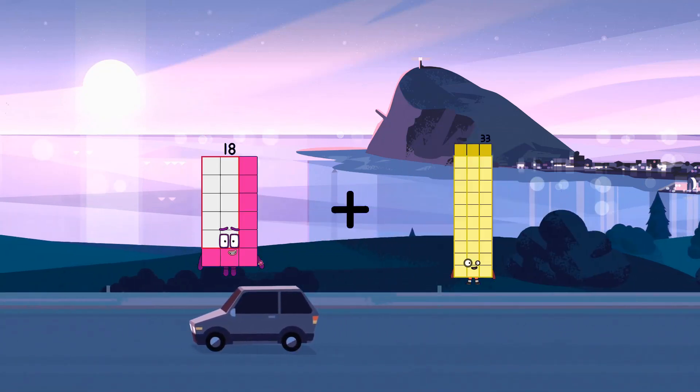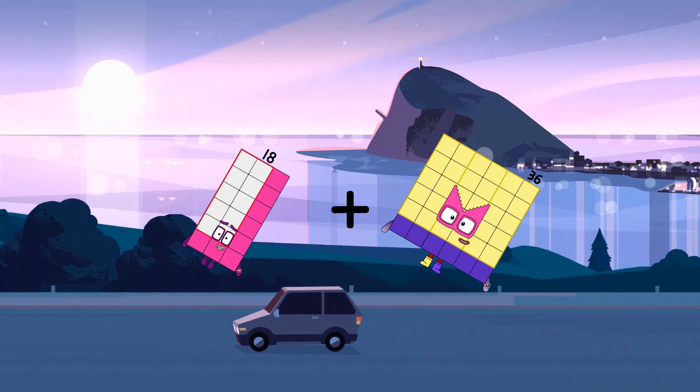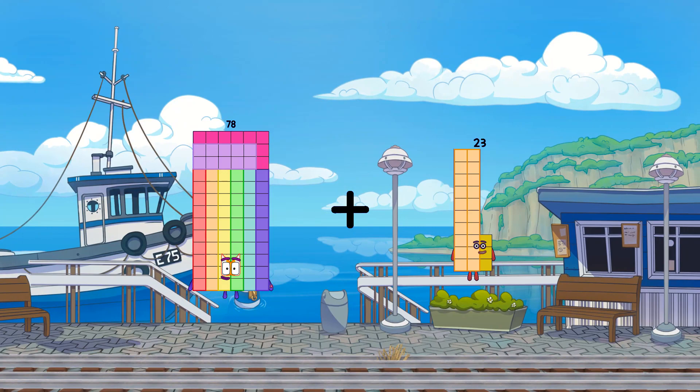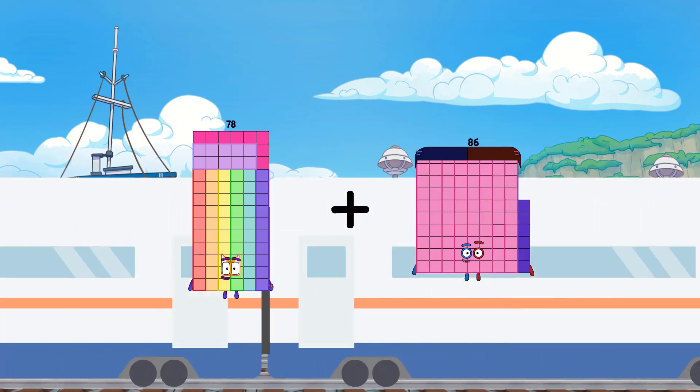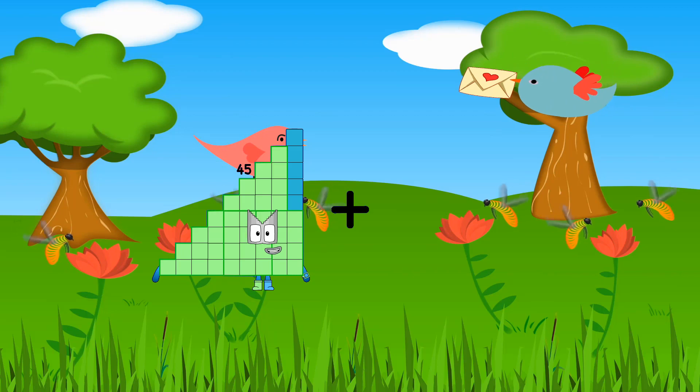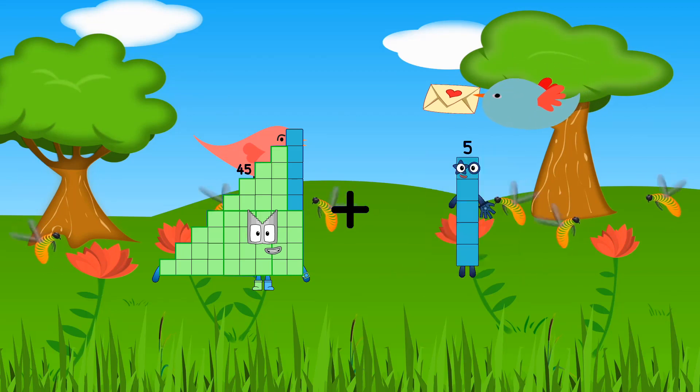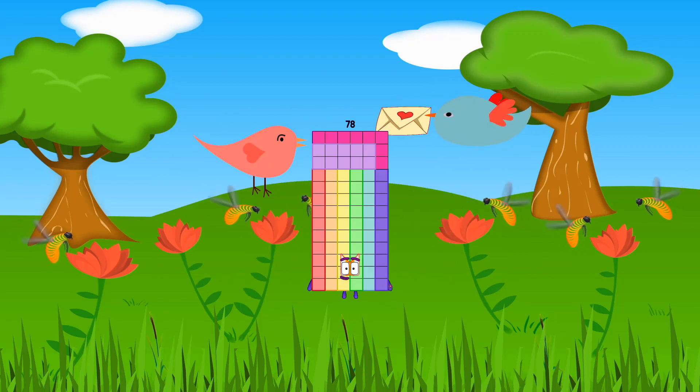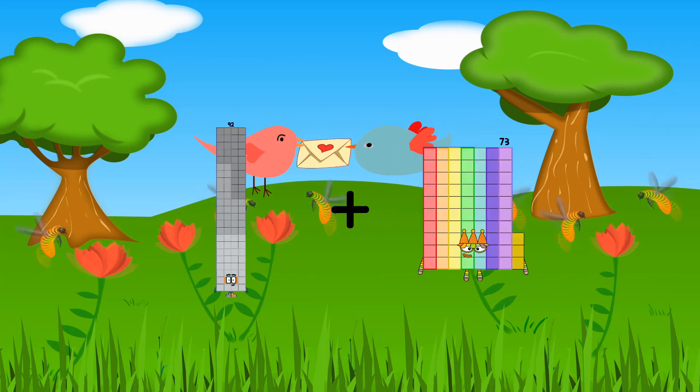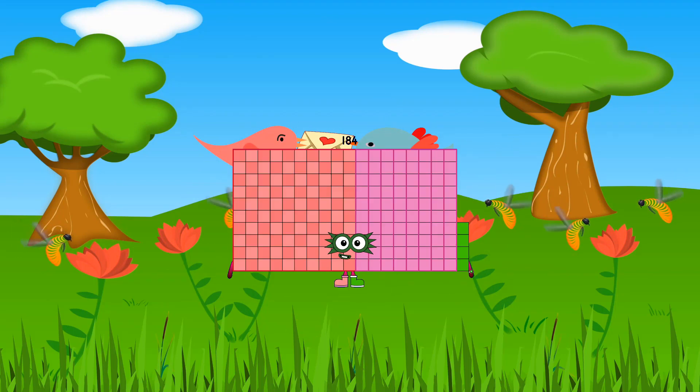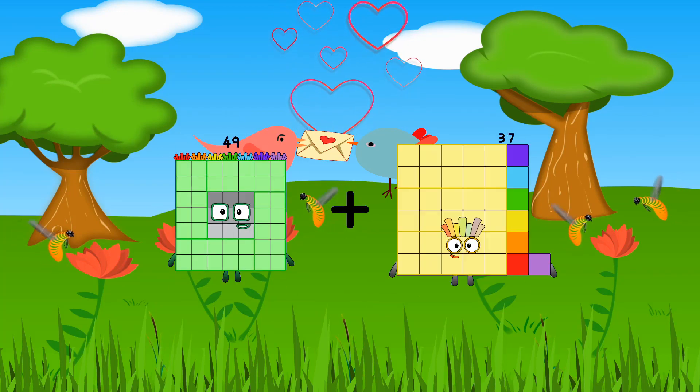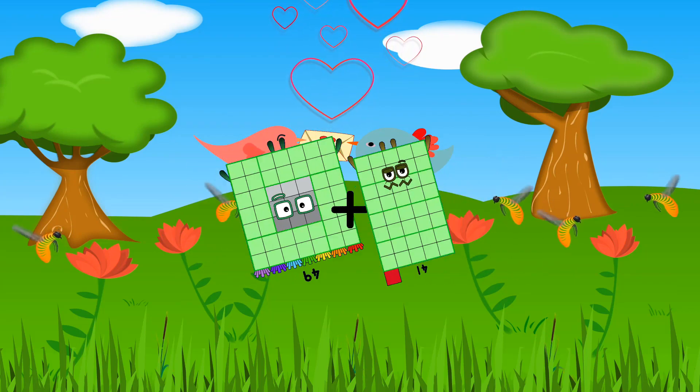18 plus 36 equals 54, 78 plus 86 equals 164, 45 plus 33 equals 78, 92 plus 92 equals 184, 49 plus 41 equals 90.